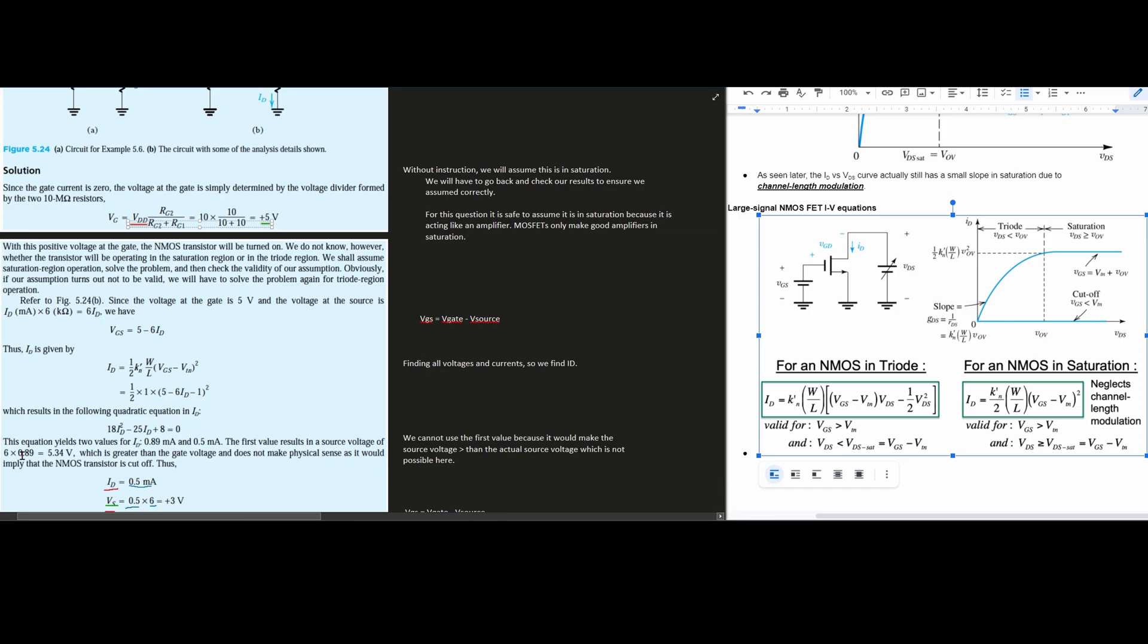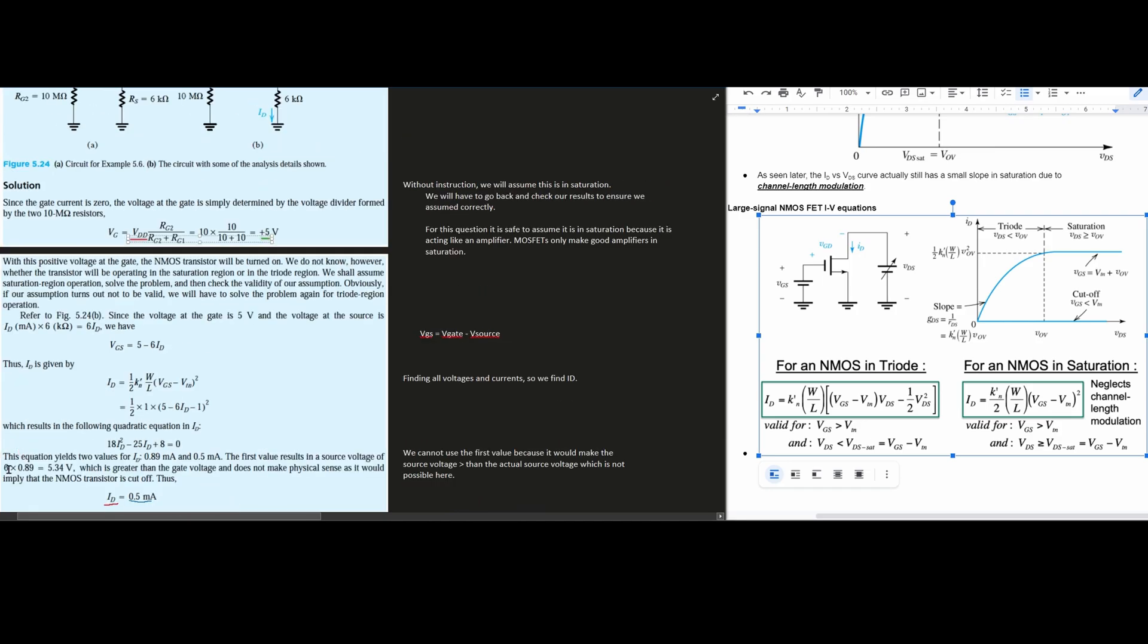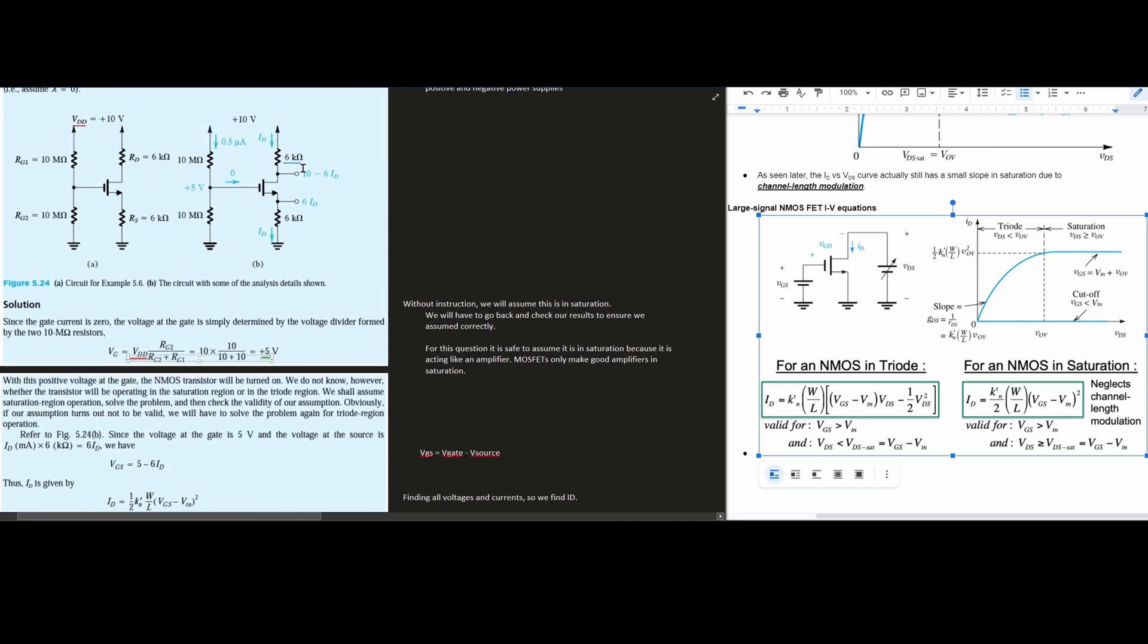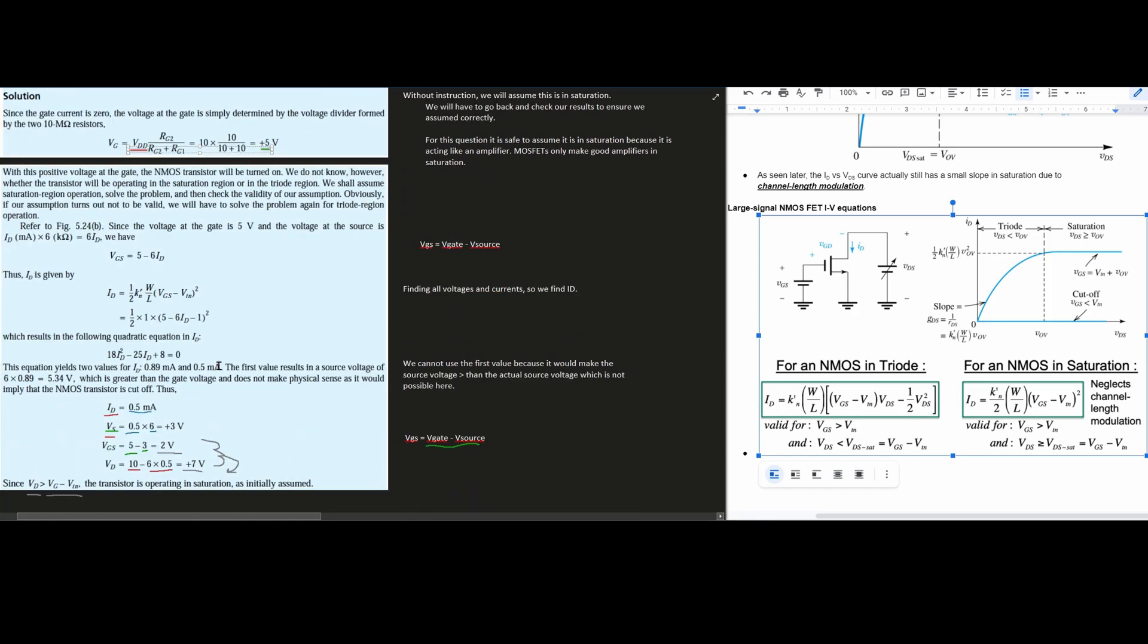Instead, what we're going to use is our 6 times the 0.5 milliamps, and that's going to be less than the gate voltage here. And this 6 is just this resistor, because remember, we have a resistor times current. That's going to give us the voltage here. So we're going to use the fact that our ID is 0.5 milliamps.